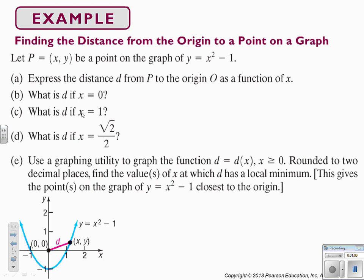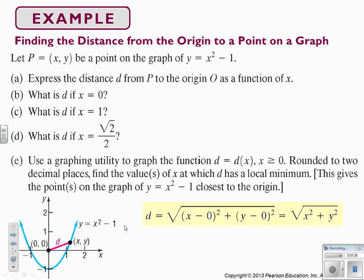We're going to find the distance if x equals 0, if x equals 1, if x equals root 2 over 2, and then use a graphing utility to graph the function d(x) when x is greater than or equal to 0, rounding to two decimal places, to find the value of x which has a local minimum. Here's a picture showing the distance from the origin — we're going to make it a generic version so we can use it for any point.